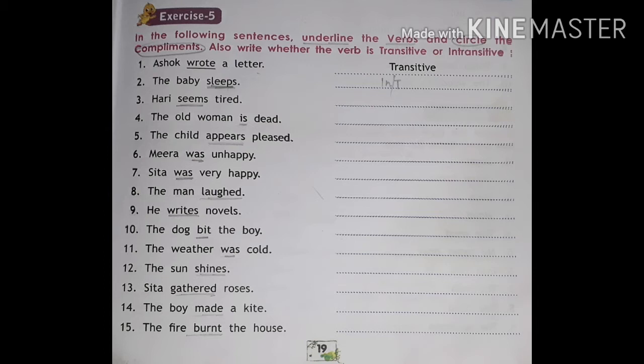Number five: the child appears pleased. Underline 'appears' and 'pleased' is the complement — circle it. It is an intransitive verb. Number six: Meera was unhappy. Underline 'was', 'unhappy' is the complement — circle the word 'unhappy'. It is a transitive verb.